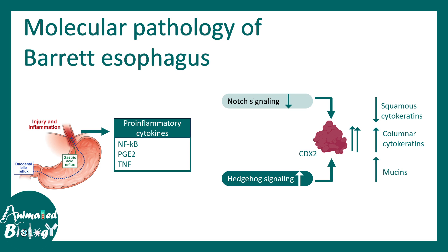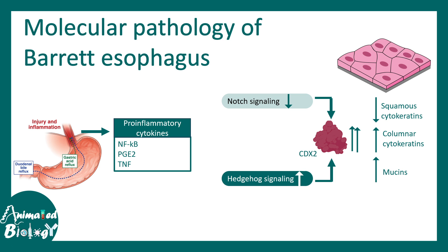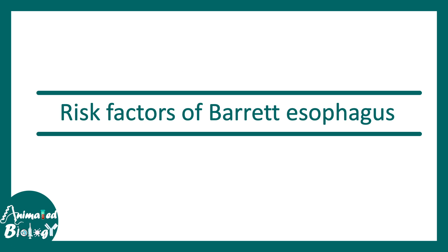Mucins associated with columnar or intestinal epithelium also get upregulated. CDX2 plays a central role in the pathology of Barrett's esophagus, leading to the transformation of squamous epithelium into columnar epithelium.